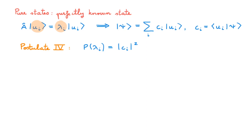So in this sense quantum mechanics is a probabilistic theory. However, a state like ψ is a pure state because this is all we can know about a quantum state. Quantum mechanics tells us precisely how to determine the coefficient c at any given time, how to then calculate their time evolution using the Schrödinger equation, and the exact probability of obtaining any given outcome of a measurement as shown here.